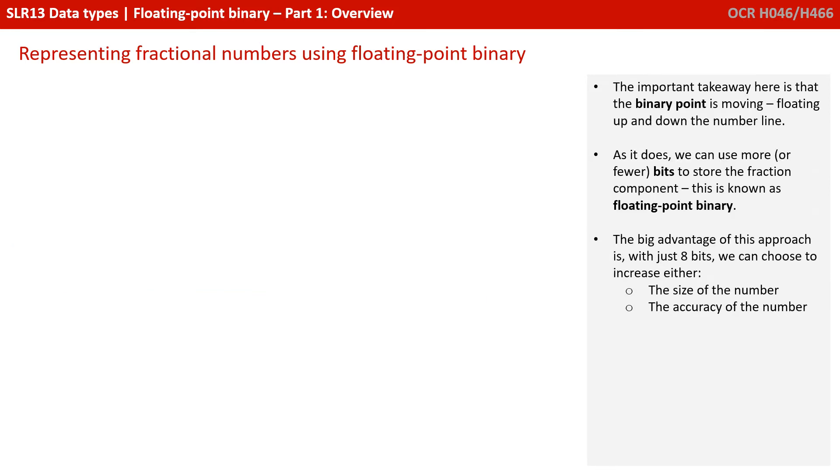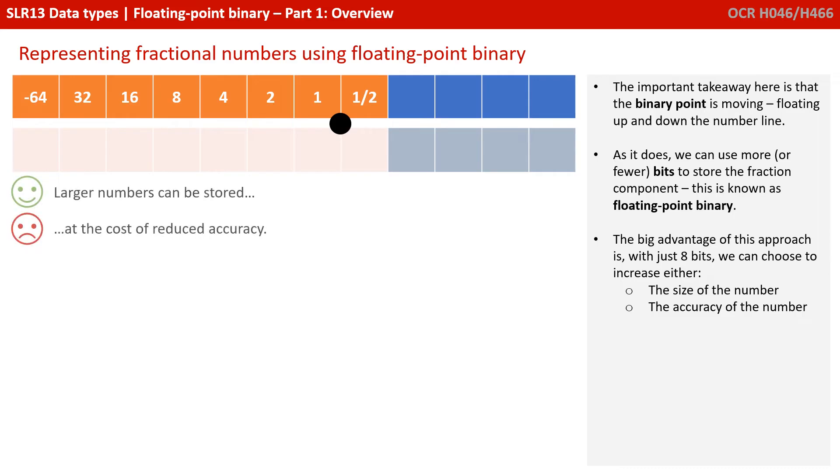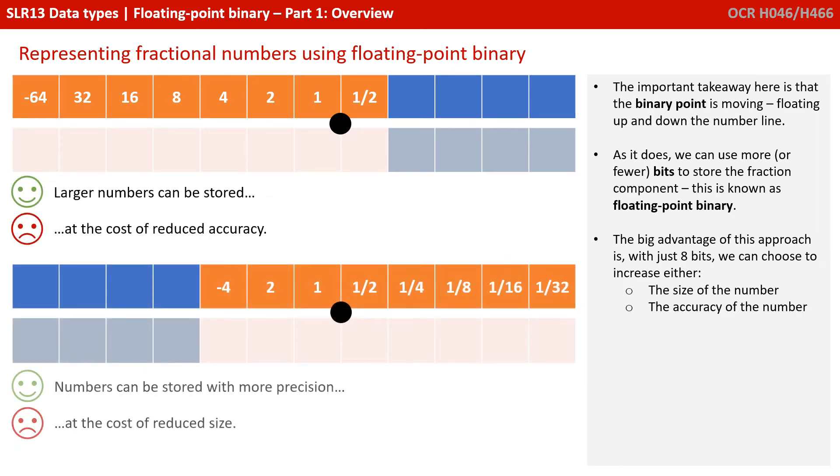Now, the important takeaway here is that the binary point is moving. It's floating up and down the number line. As it does, we can use more or fewer bits to store the fractional component, and this is known as floating point binary. The big advantage of this approach with just 8 bits is we can either choose to increase the size of the number or the accuracy of the number.